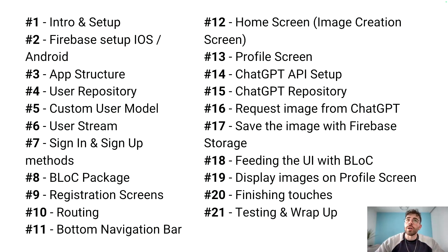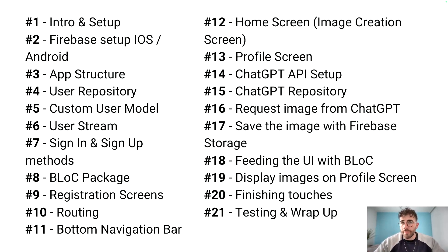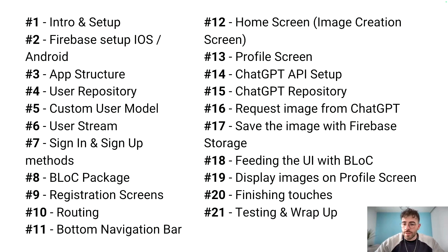Then we're going to do the bottom navigation bar and the home screen, where we'll have the image creation on the screen. Profile screen, the ChatGPT API setup. We're going to create a ChatGPT repository to handle the responses from ChatGPT and transform those into classes. Then we'll request images from ChatGPT, save them to Firebase Storage, feed the UI with BLoC, and display the images on the profile screen. Finally, we'll do finishing touches and testing. That's what I see for now — it's not set in stone and can change. I haven't recorded the videos yet, so I may add episodes if some parts run too long.